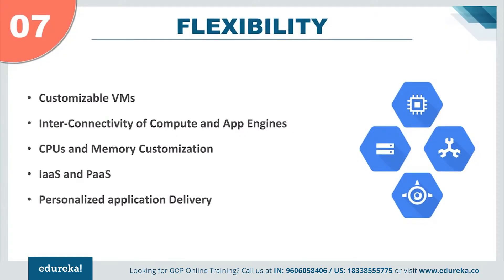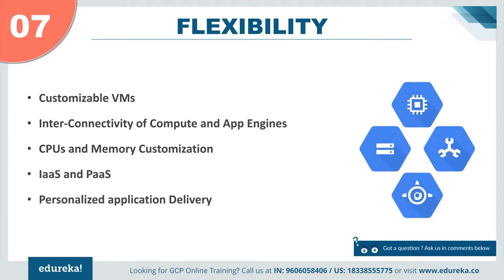At number seven, we have flexibility. Custom machine types is a feature of Google Compute Engine that lets you easily create a machine type customized to your needs. With custom machine types, you can create virtual machines with the optimal amount of CPU and memory required for your workloads — from as little as one virtual CPU to as many as 64 virtual CPUs. With Compute Engine you get infrastructure as a service, and with App Engine you get platform as a service, all under one roof. The flexibility allows creation of a fully managed customizable machine that can be scaled up or down according to traffic, breaking down the barriers between IaaS and PaaS while making things simpler.